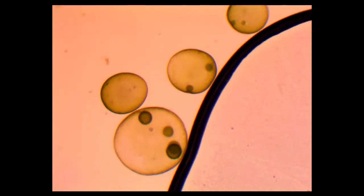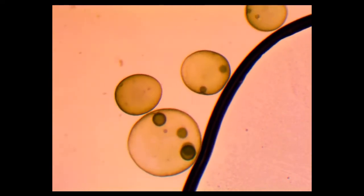Here we can see the volvox using the 4x objective for a 40x magnification. Here I've moved it up to the 10x objective. We can see some daughter colonies, and you can see some of the smaller ones moving around.